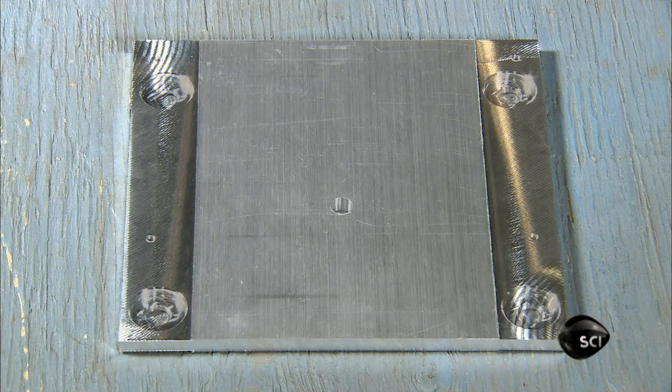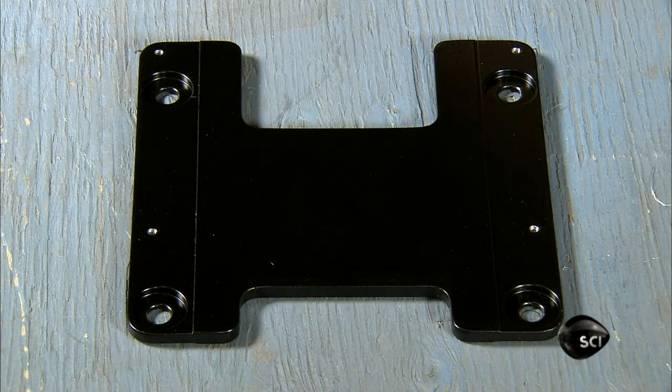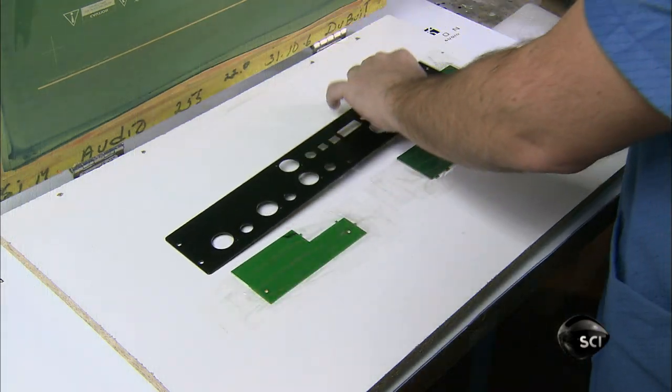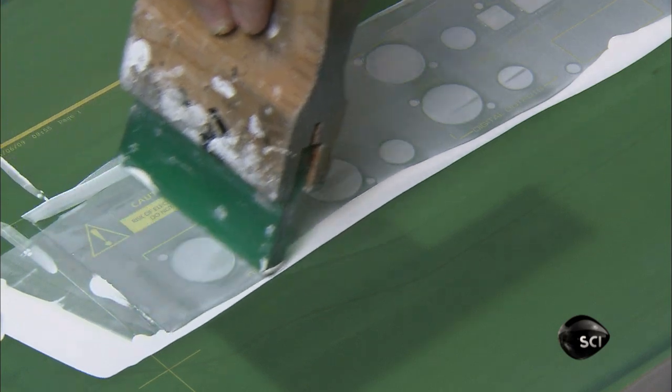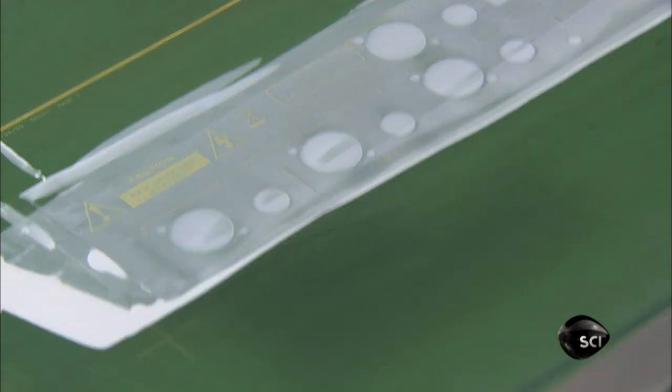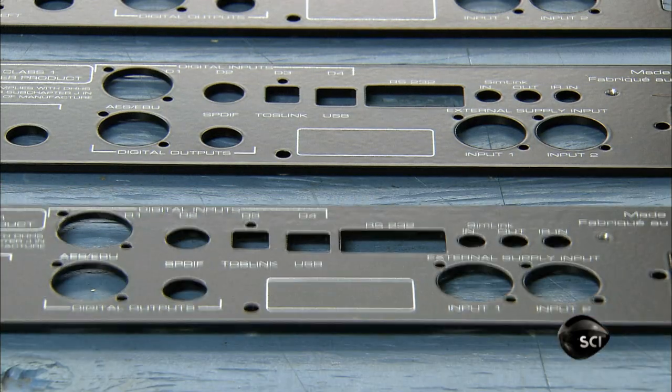Workers spray the trimmed chassis parts with black powder paint, then bake the paint in an oven to make it more durable. They print labeling on the chassis's front and back panels by squeegeeing white epoxy paint through a silkscreen stencil. Then they put the panels in the oven to bake the paint.